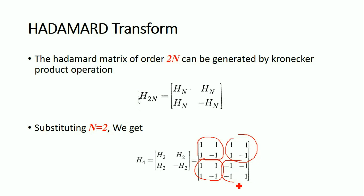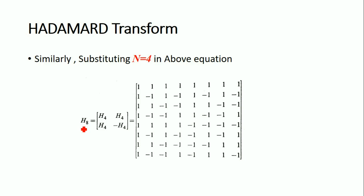If you substitute N=4, then you will get the Hadamard matrix H8 as [H4, H4; H4, -H4]. If you divide this into four parts, the top-left, top-right, and bottom-left represent H4, and the bottom-right represents -H4.